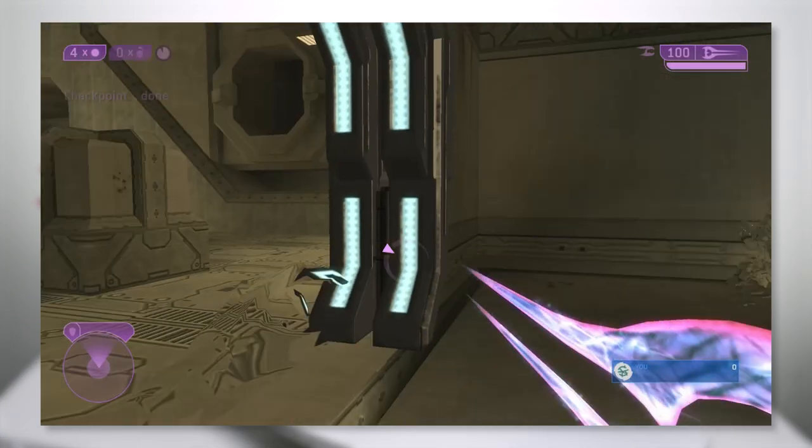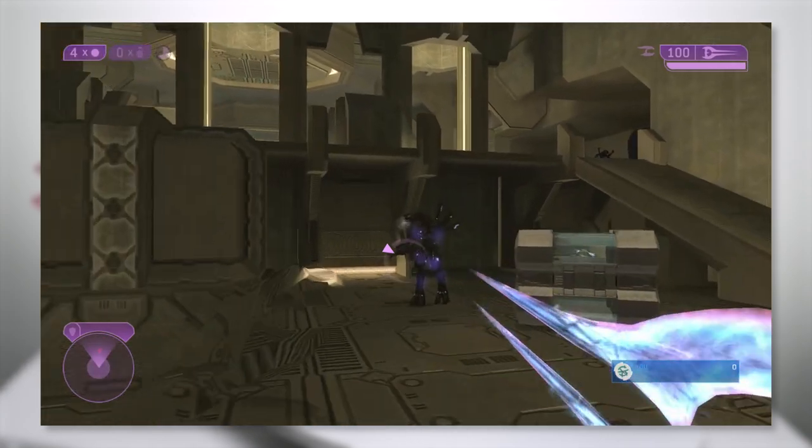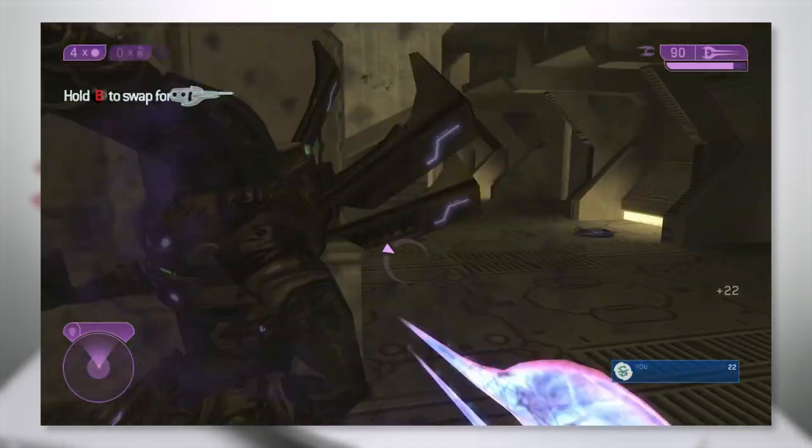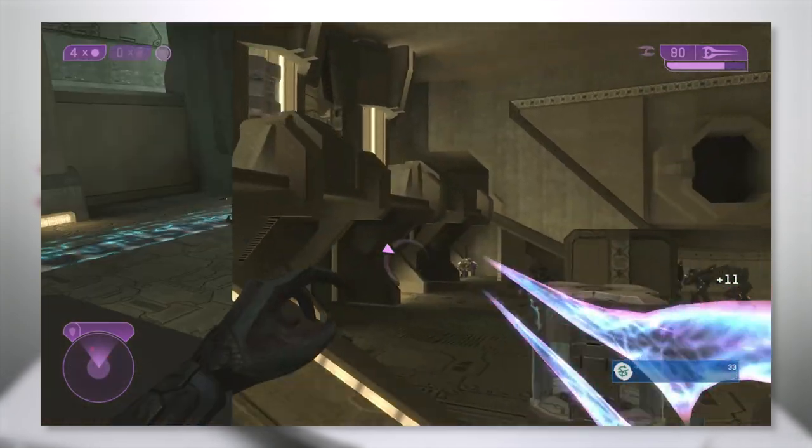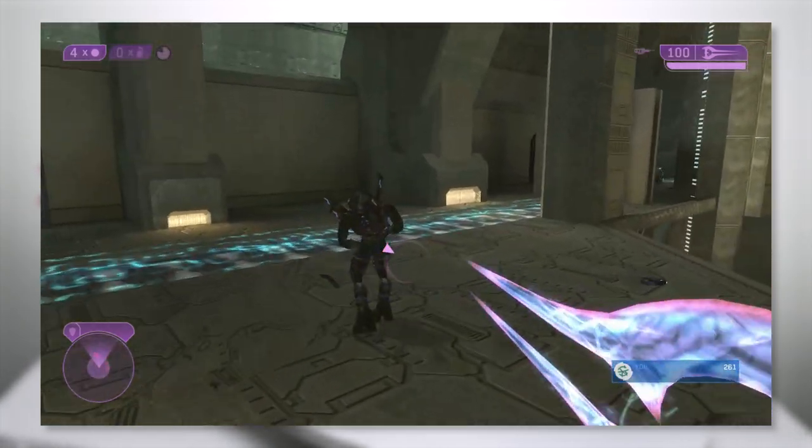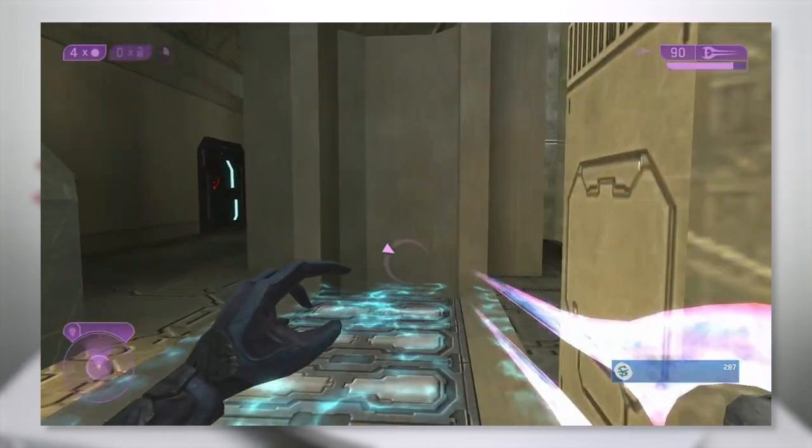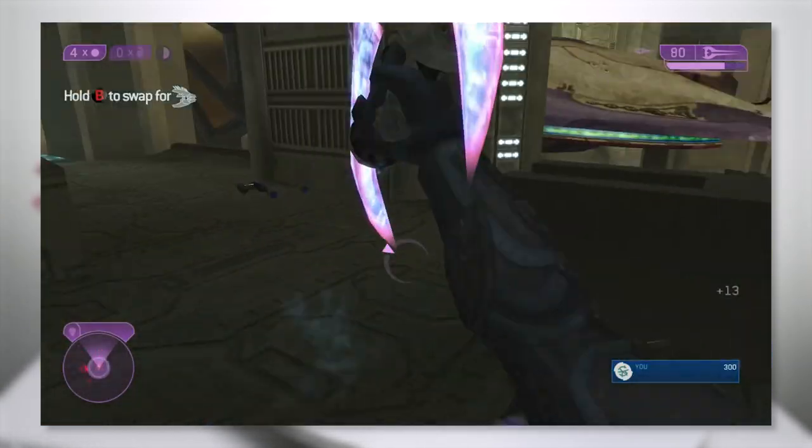In Halo's lore, the Energy Sword is a covenant weapon wielded by elite warriors and is believed to be a holy weapon. Twin plasma blades ignite from the hilt. In gameplay, the sword appears in every Halo game except for ODST and is playable in every Halo game that it appears in except for the first.